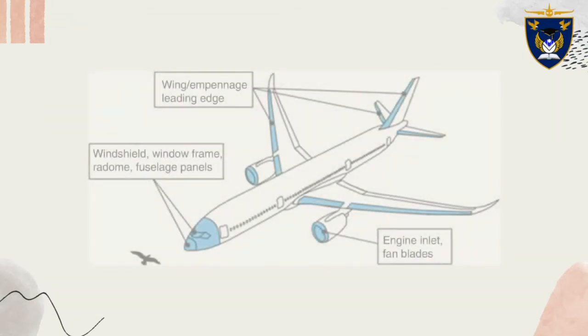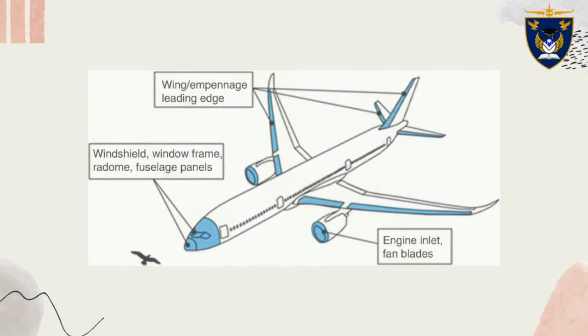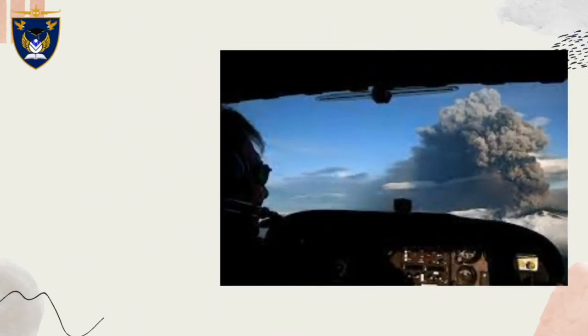For the exterior of the aircraft, forward-facing surfaces such as landing lights and wing leading edges will be damaged or scratched. In the cockpit, vision will be obstructed by cloud and windshield abrasion. For the instruments, ash blocks the pitot tube used to measure airspeed.